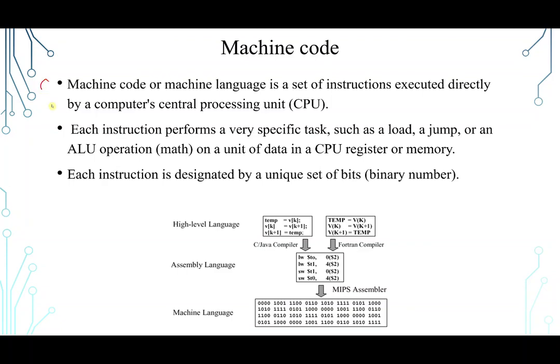So each instruction is designated by a unique set of bits, a binary number. And actually, we are going to see how exactly that is going to be performed in this course. Not in this lecture, but in this course. So a high-level language is going to use a compiler to convert that to assembly language, for example, a low-level language, then to machine language. This is intermediary language or intermediary file. Then a very low-level language, like a machine language that the computer understands.